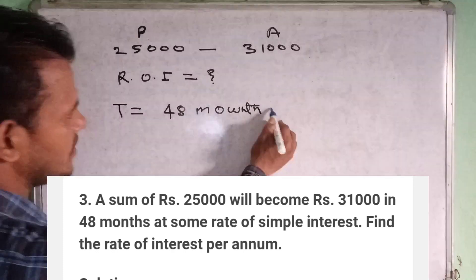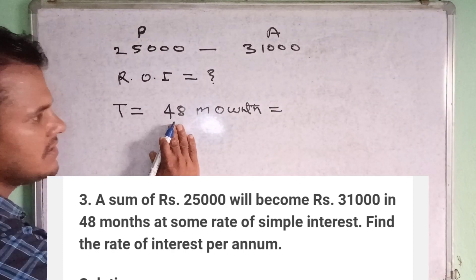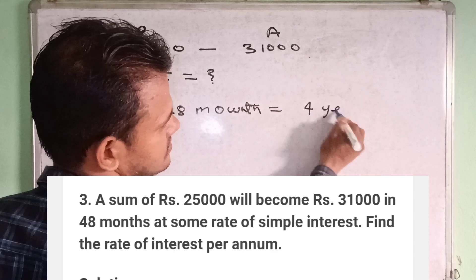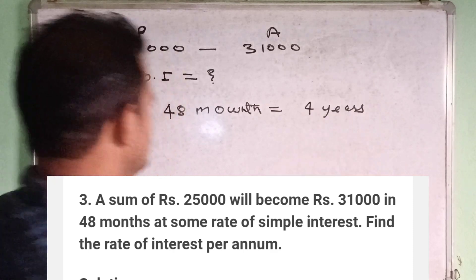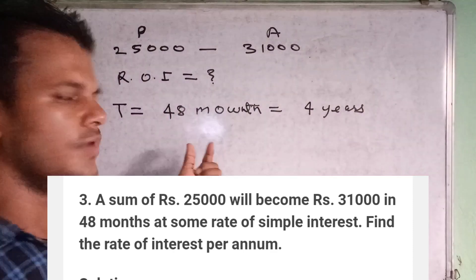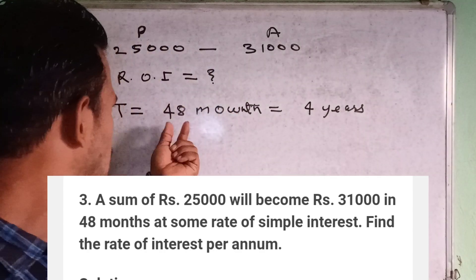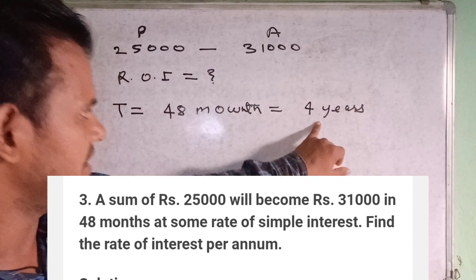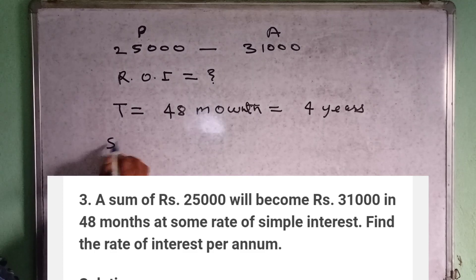48 months is equal to 4 years, because one year is equal to 12 months, so 48 months will be 4 years. The simple interest is equal to amount minus principal — the difference is the simple interest.